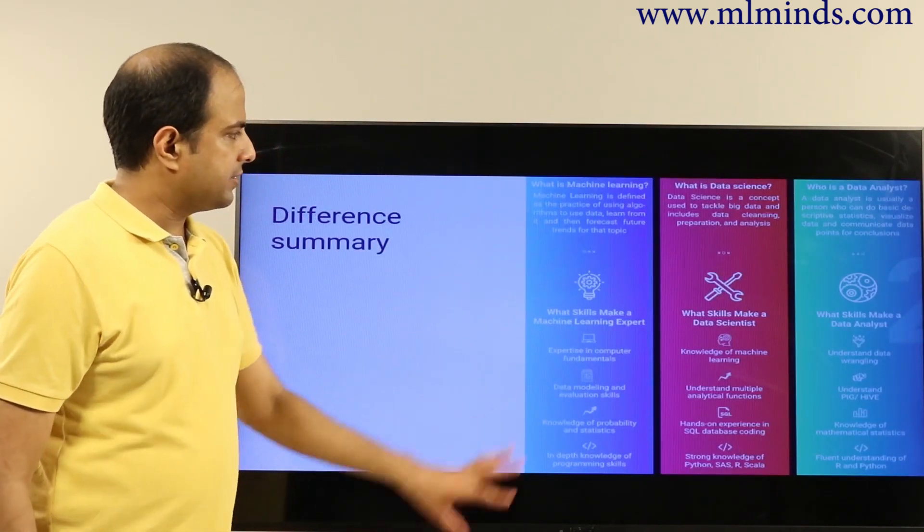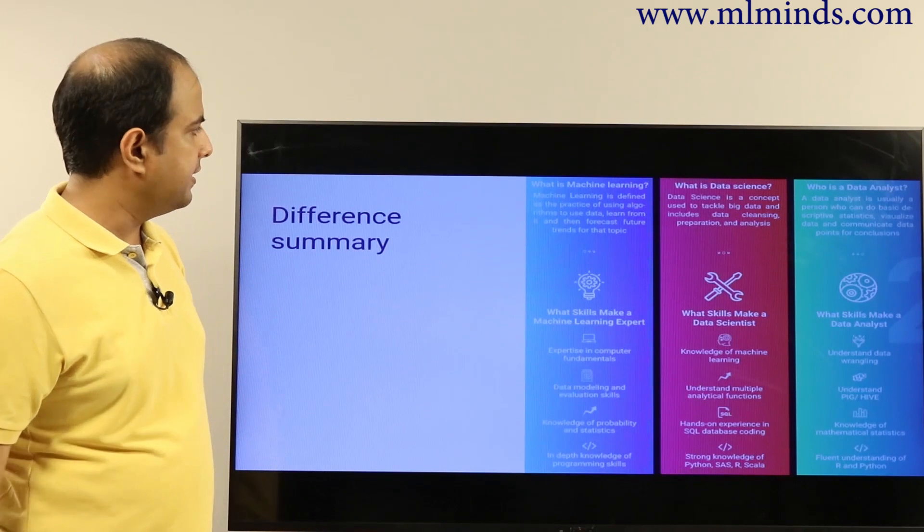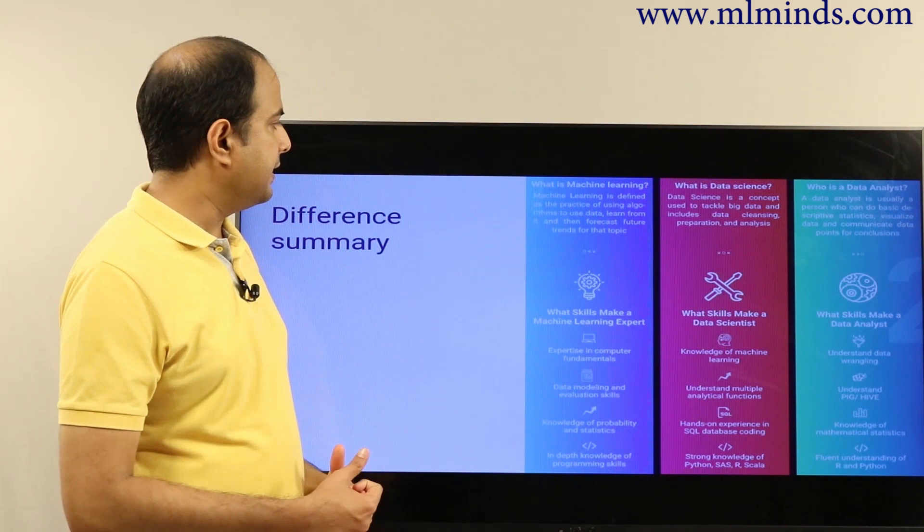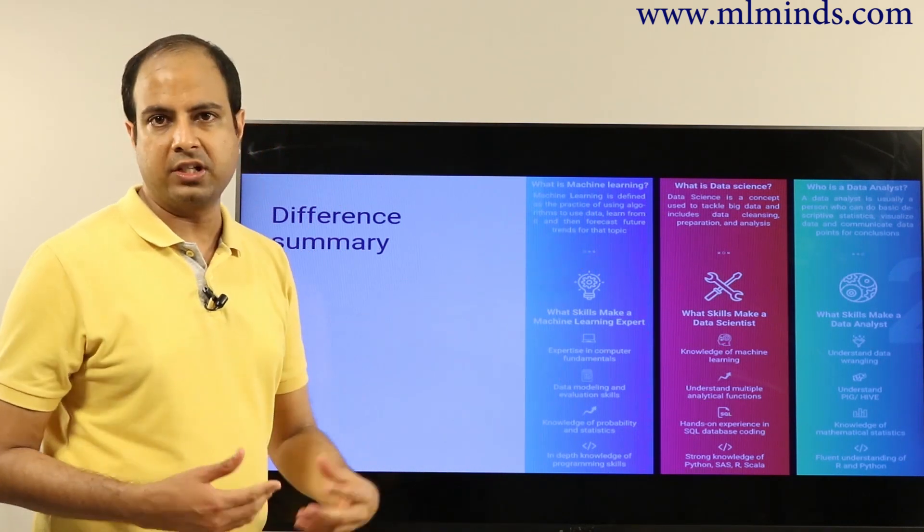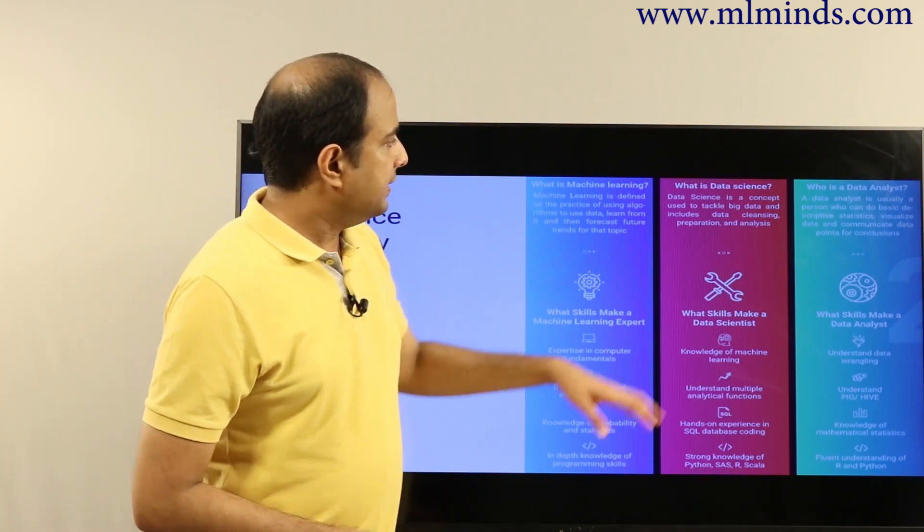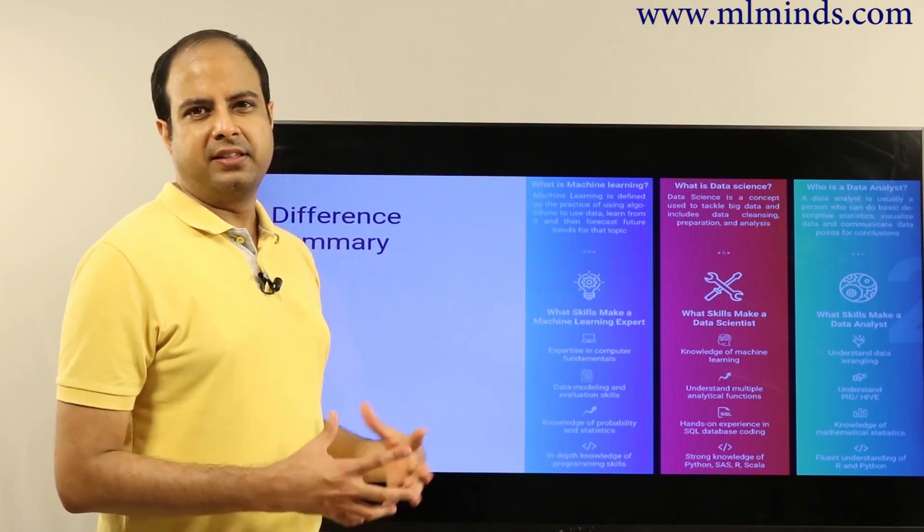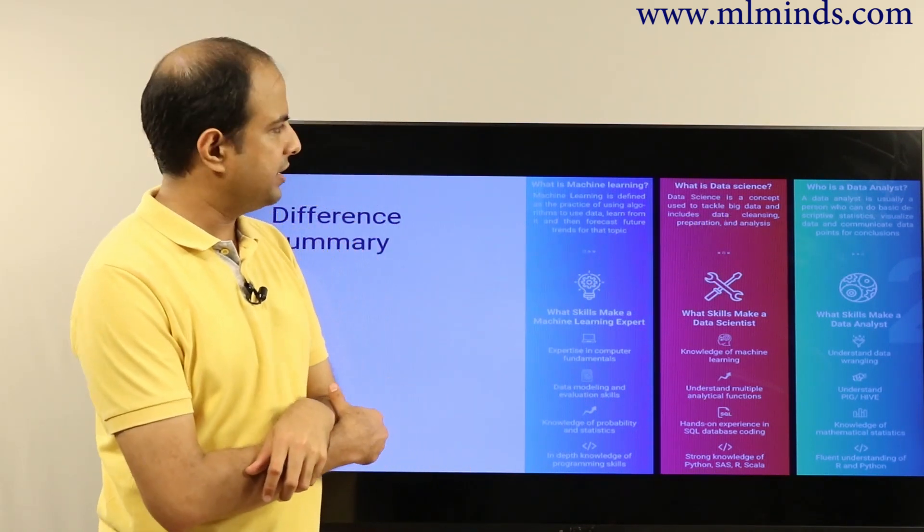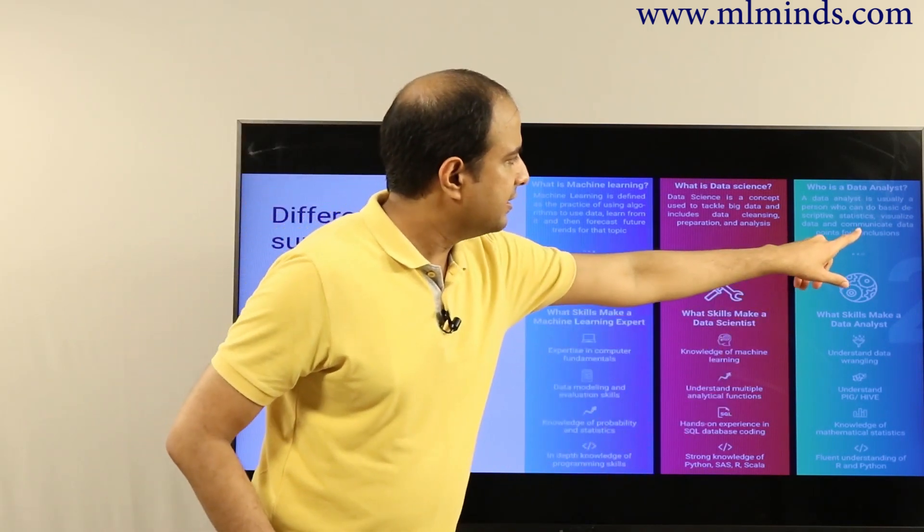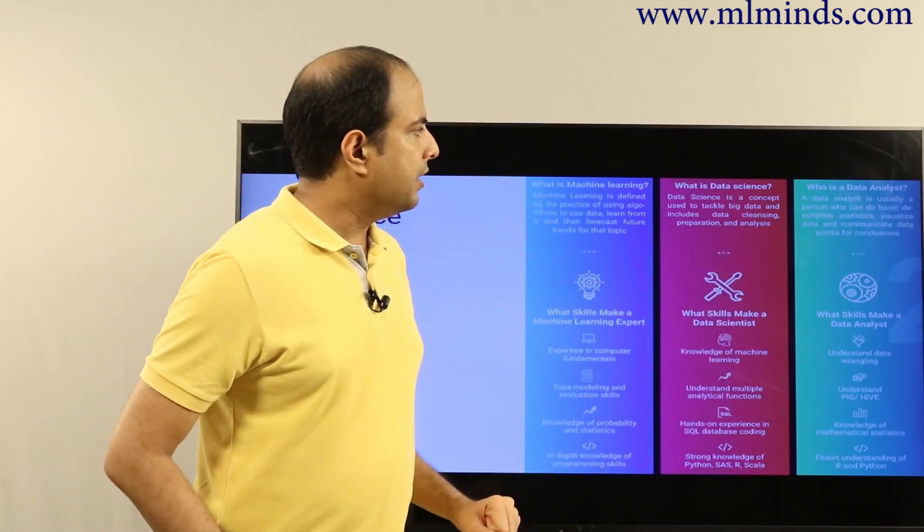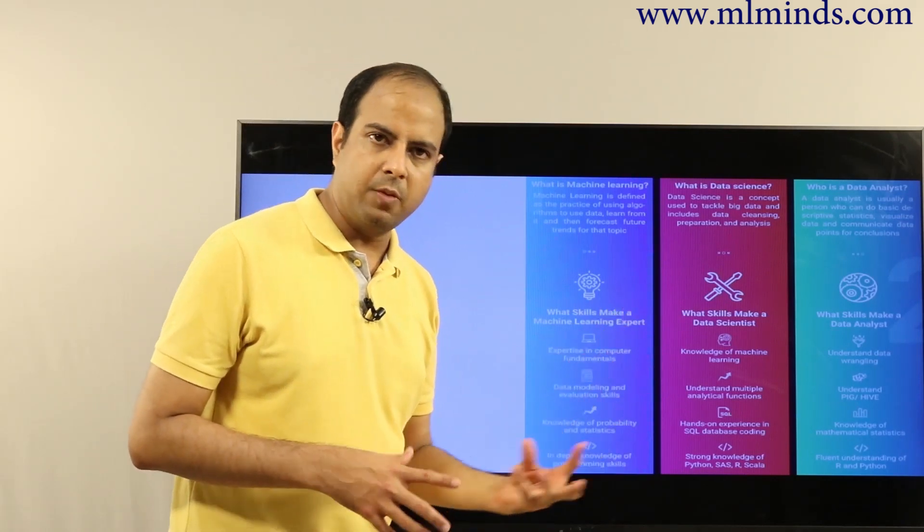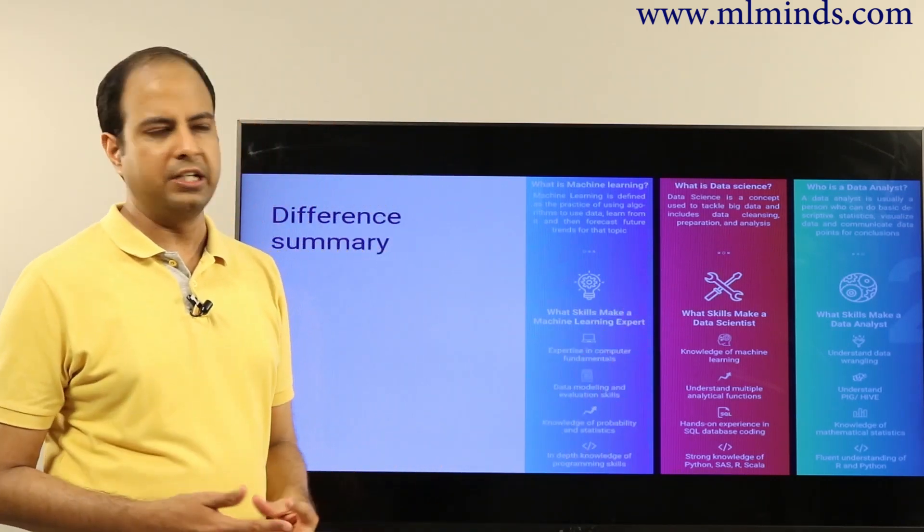I've tried to summarize these things here in this picture. Machine learning is the practice of using algorithms to learn from data and use them for forecasting predictions. Data science is a broad concept used to tackle big data, including data cleaning, preparation, and analysis. An analyst is usually a person who can do basic descriptive statistics, visualize data, communicate using data, and preprocess data.